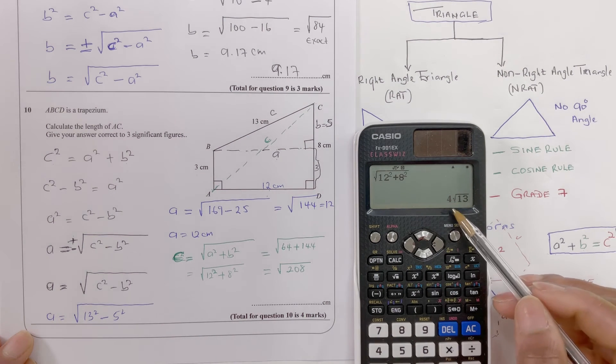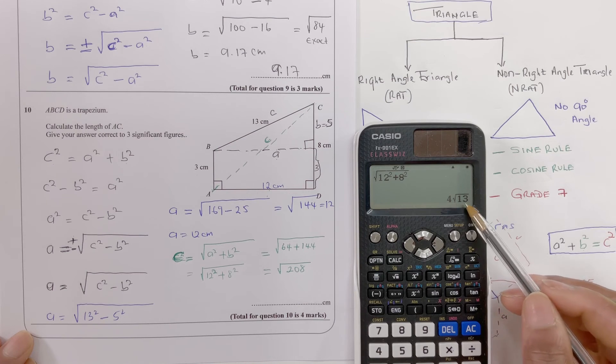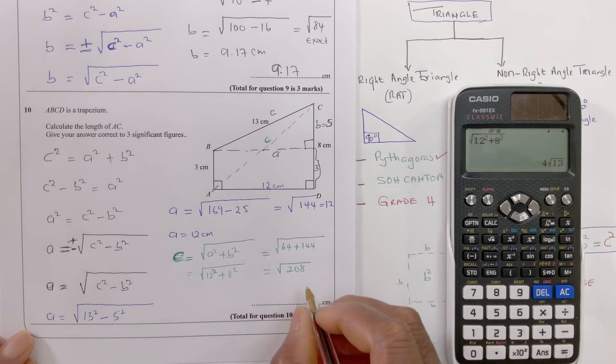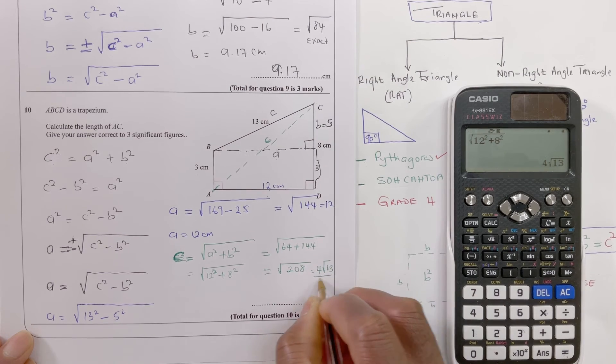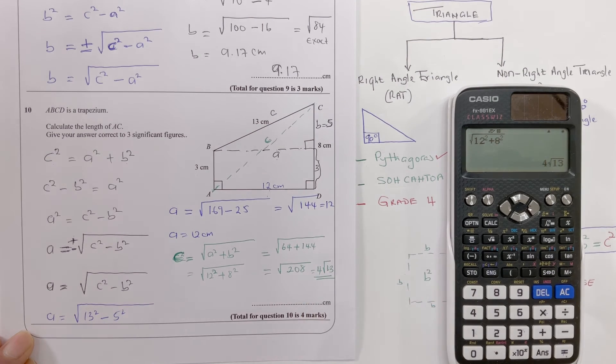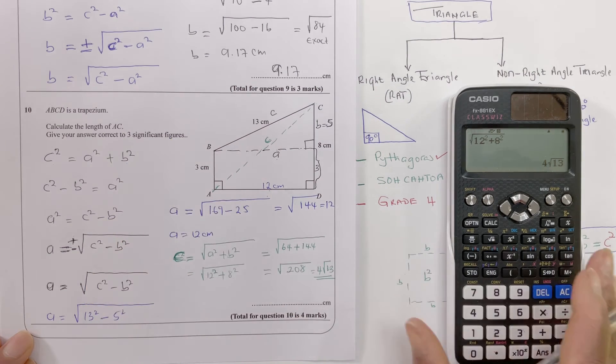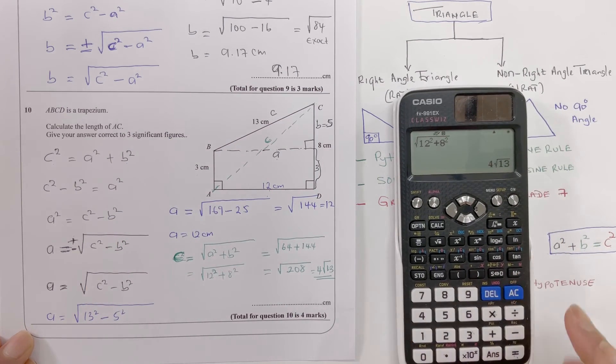That gives us 4 root 13, that's the exact value, 4 root 13. This is called exact value. We don't want the exact value, we want in three significant figures. So we have to press standard to decimal...